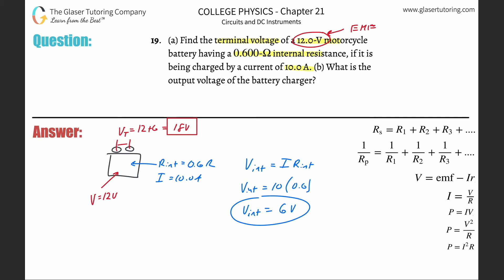That's letter A. And then letter B says, what is the output voltage of the battery charger? Kind of a trick question because whatever the terminal voltage is here will be the output voltage of the battery charger. So 18 volts.